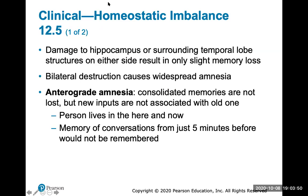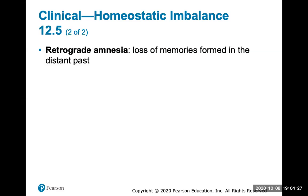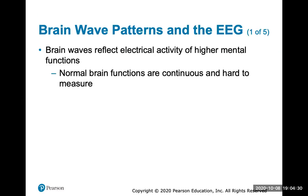Damage to the hippocampus or surrounding temporal lobe on either side results in slight memory loss; bilateral destruction causes widespread amnesia. Anterograde amnesia is when consolidated memories are intact but new inputs are not associated with old ones — a person lives in the here and now and won't remember conversations from five minutes prior. Retrograde amnesia is loss of memories formed in the distant past.